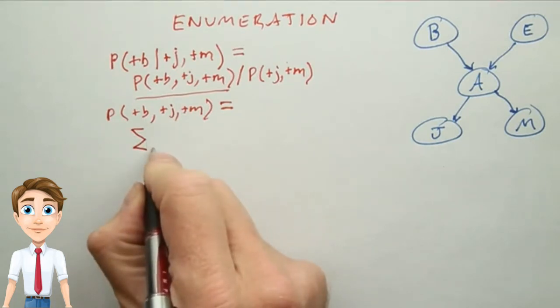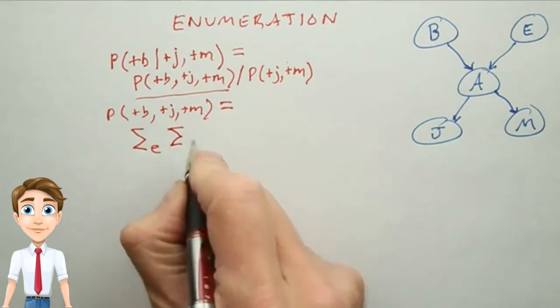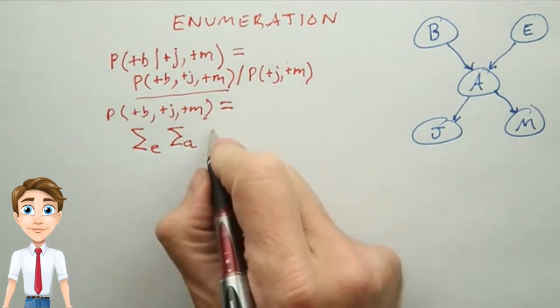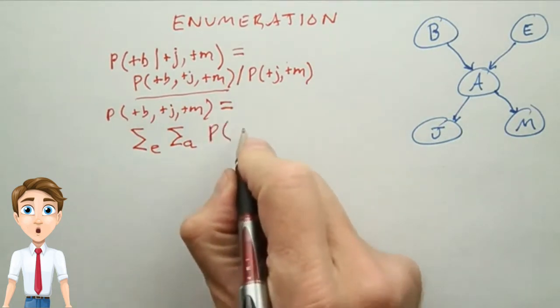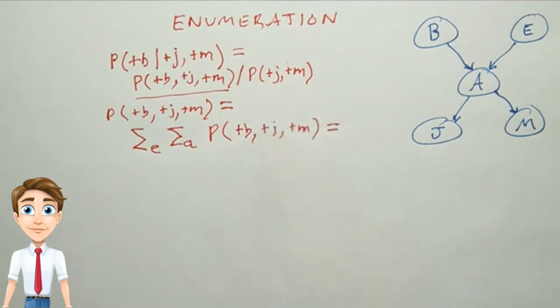So we'll sum over those variables for all values of E and for all values of A. In this case, they're Boolean, so there's only two values of each. We ask, what's the probability of this unconditional term? And that we get by summing out over all possibilities, E and A being true or false.